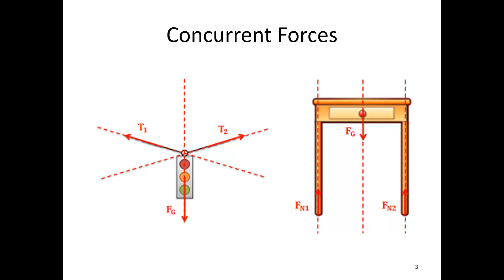This is very much the opposite of our concurrent force system — it's anything where everything does not come together at a single point. The concurrent system has a single point as the intersection of all lines of action, whereas the non-concurrent system has no point where all the forces come together.